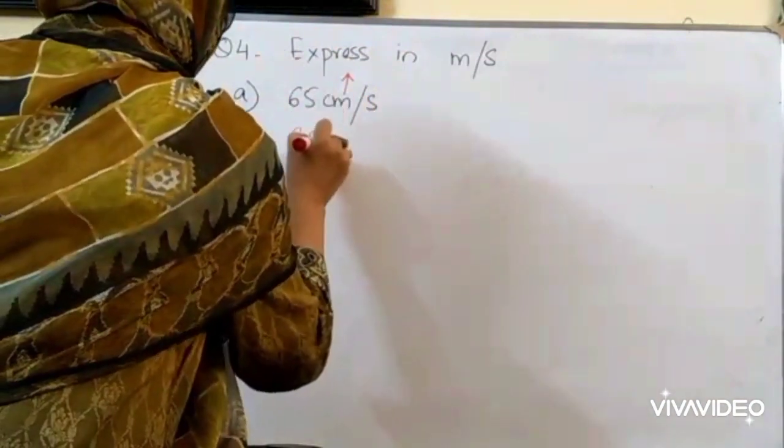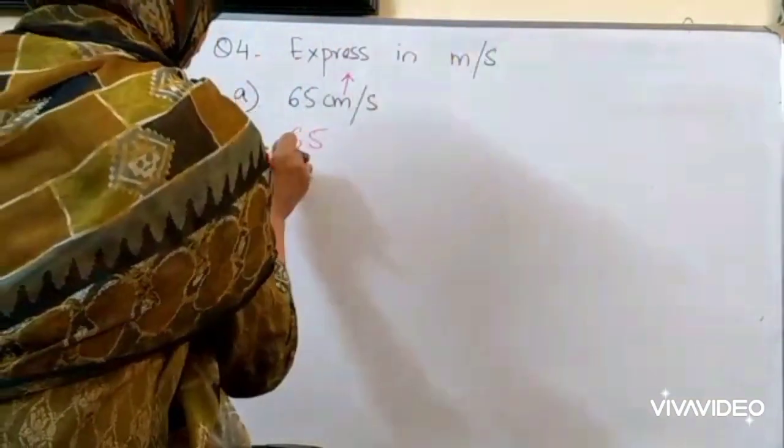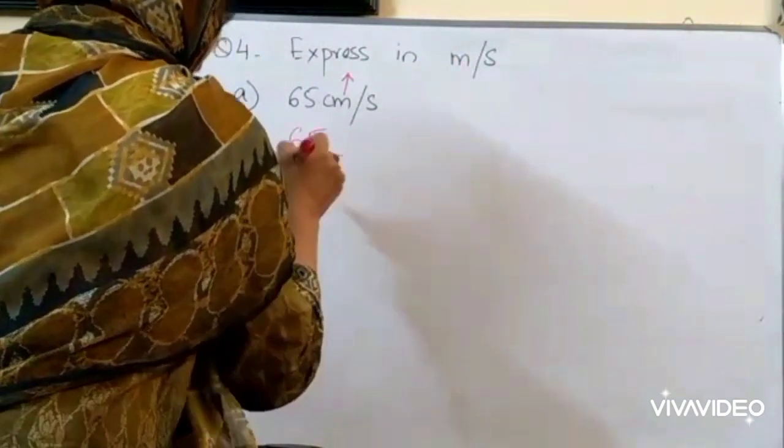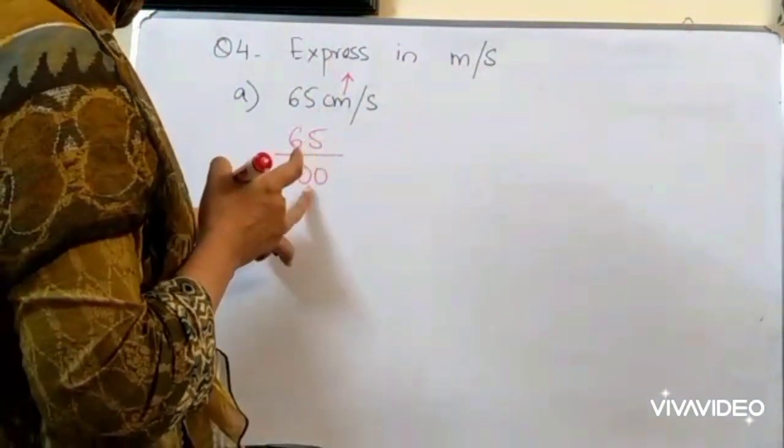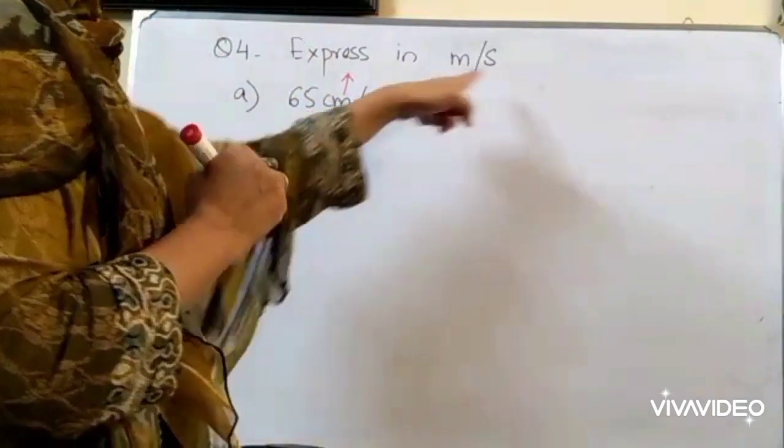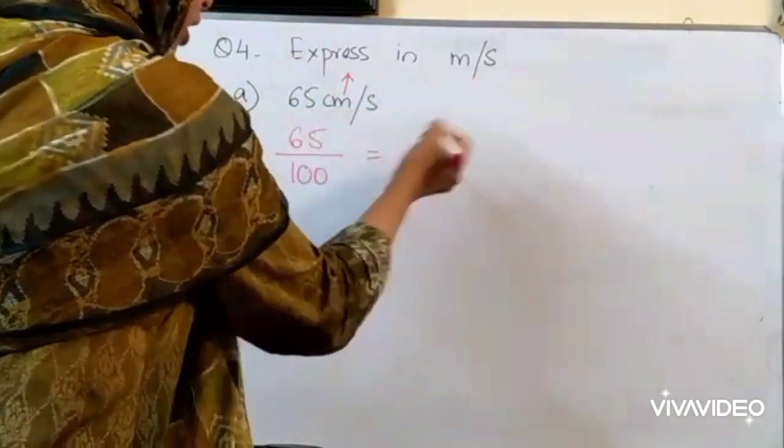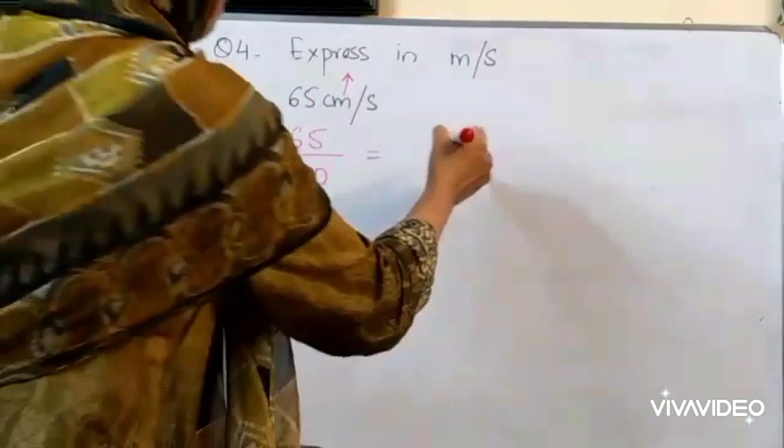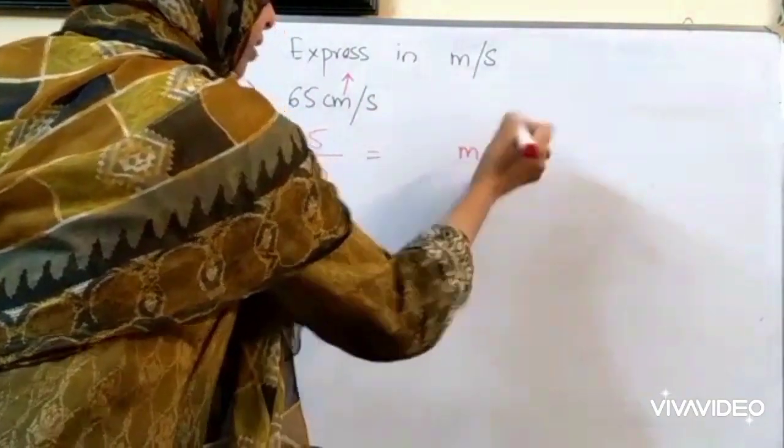Now, 65 upward division. So, we will write in the denominator. 100 centimeter makes 1 meter. So, divide it by 100. No change in the seconds column. That is all. Change it. And the answer will be in meter per second.